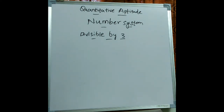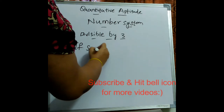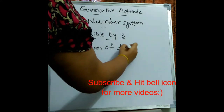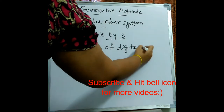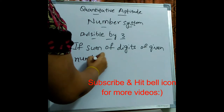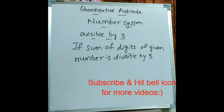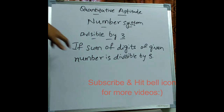Let's see what is the rule to find out whether the given number is divisible by 3 or not. If the sum of the digits of the given number is divisible by 3, then the number will also be divisible by 3. This is the rule.